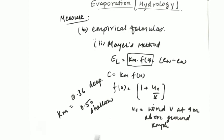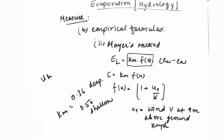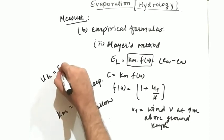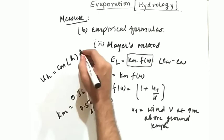Now there is again a formula for calculating U9. It is UH equals to Cm H to the power 1 by 7.